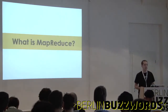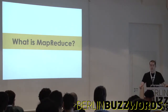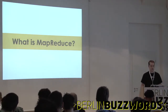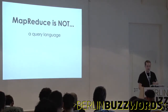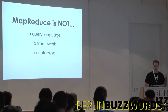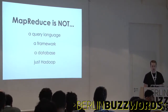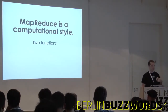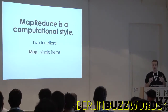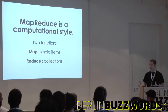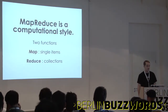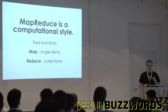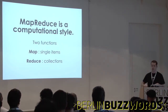This is probably going to be banal for those of you familiar with Hadoop. MapReduce 101: what MapReduce is not — it's not a query language, it's not a framework, it's not a database, it's not just Hadoop. Instead, it's a computational style involving two primary functions: a map function, which operates on single items of data, and a reduce function, which operates on collections of data. These are just patterns — the tools you have to use, not a strict structure.